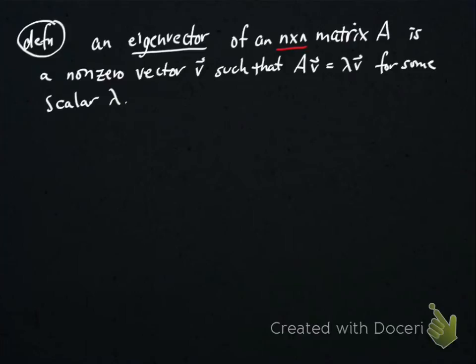So there's a few things to note here. One, A is going to be a square matrix. Eigenvectors are only defined for square matrices. Two, eigenvectors by definition must be non-zero vectors. And three, this is an existence question. A non-zero vector is called an eigenvector if there exists some scalar lambda so that A times V is that scalar times V.